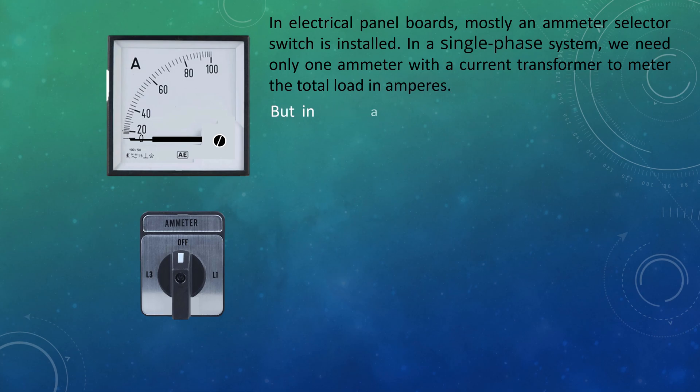But in a three-phase system, for metering amperes for each line, we need three ammeter and three current transformers.